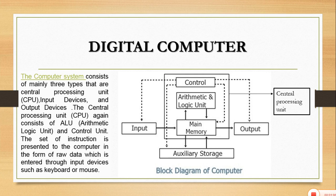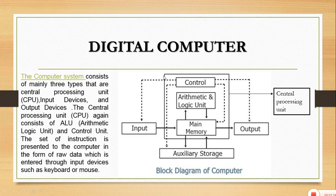This video is based on chapter number one, which is introduction to the computer. We will start with the digital computer — the block diagram shown here. It can be seen that the computer system consists of mainly three parts: the central processing unit, the input devices and output devices, and the third part is the auxiliary storage units.